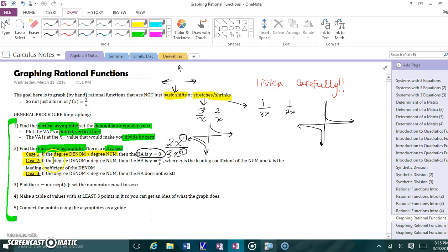What about if the degree in the denominator is the same as the degree in the numerator? Then, the horizontal asymptote is this. Now, you might be wondering, what are a and b? Well, a is the leading coefficient of the numerator, b is the leading coefficient of the denominator. Let's modify this slightly. What if my rational function was 2x squared over 3x squared plus 7? In this case, the degrees are the exact same. So you're going to take the leading coefficient of the numerator, the leading coefficient of the denominator, and just make a fraction out of it. So your horizontal asymptote would be 2 thirds, y equals 2 thirds.